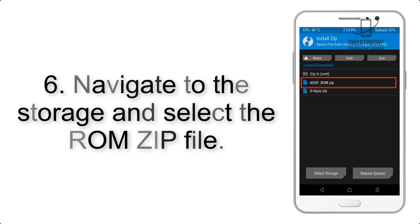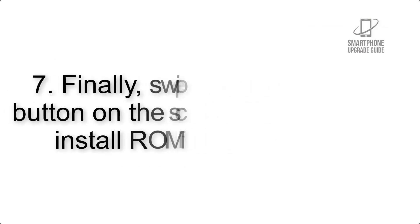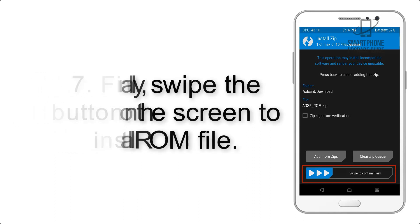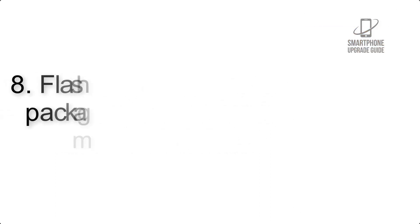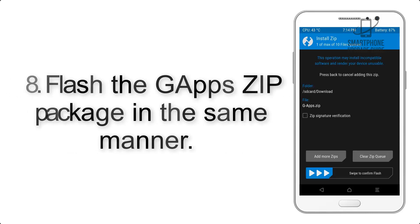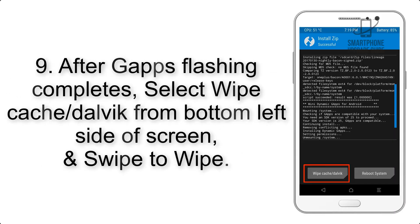Step 5: Go back to the recovery main screen and tap on the Install button. Step 6: Navigate to the storage and select the ROM zip file. Step 7: Finally, swipe the button on the screen to install the ROM file.